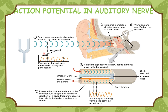Here you can see the sound waves representing alternating areas of high and low pressure — condensation and rarefaction. The tympanic membrane vibrates in response to the sound wave. Vibrations are amplified across the ossicles. The vibrations against the oval window set up a traveling wave in the fluid of the scala vestibuli. The pressure bends the cochlear duct membrane at the point of maximum vibration for a given frequency, causing the hair cells in the basilar membrane to vibrate.